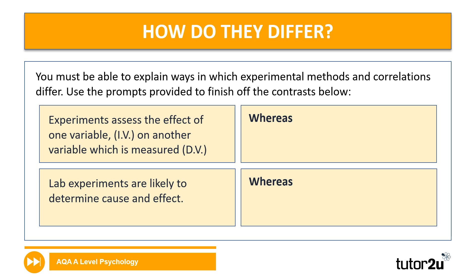Let's start with a really important thing related to the correlational method: it is not an experiment. So we're going to look at the difference between correlations and experiments. On the left-hand side you've got terms related to experiments, and on the right the correlation version. Experiments assess the effect of one variable — the IV — on another variable that's measured — the DV. Lab experiments are likely to determine cause and effect.